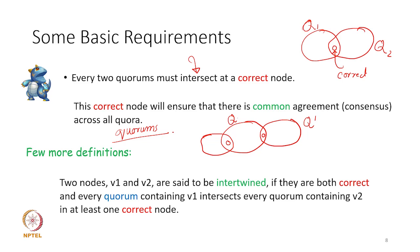Two nodes V1 and V2 are said to be intertwined if they are both correct, and every quorum containing V1 intersects every quorum containing V2 in at least one correct node. This specializes the intersection definition to pairs of nodes: two nodes are intertwined when both are correct and their respective quorums always intersect at a correct node.